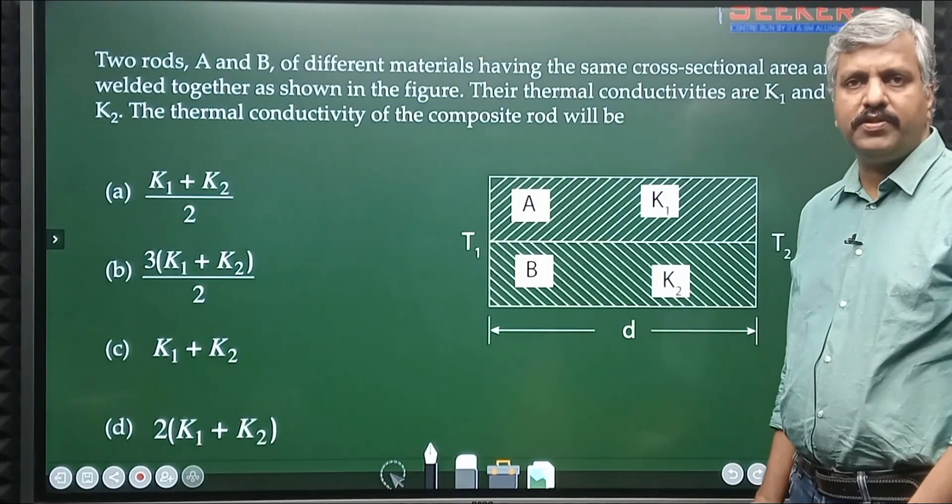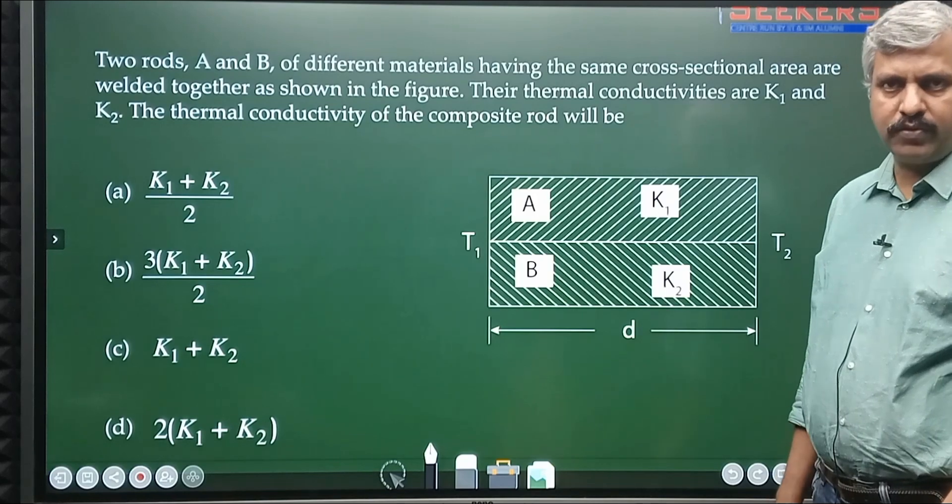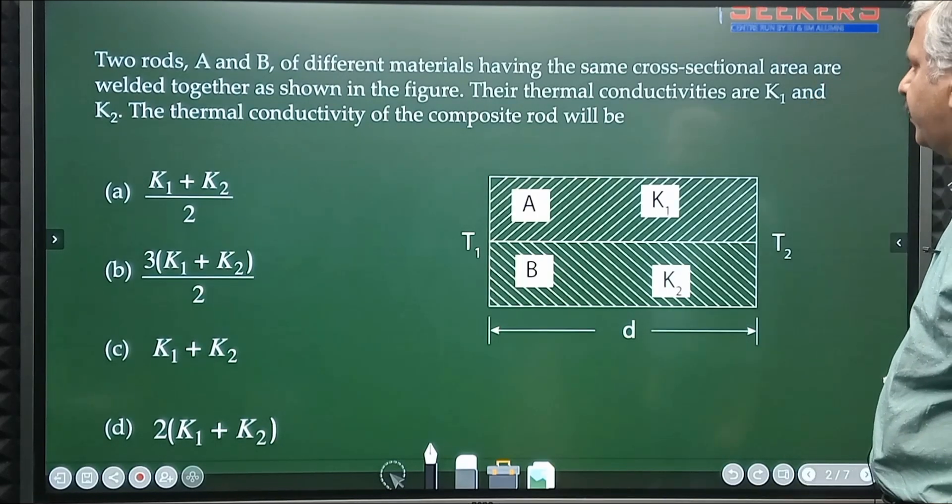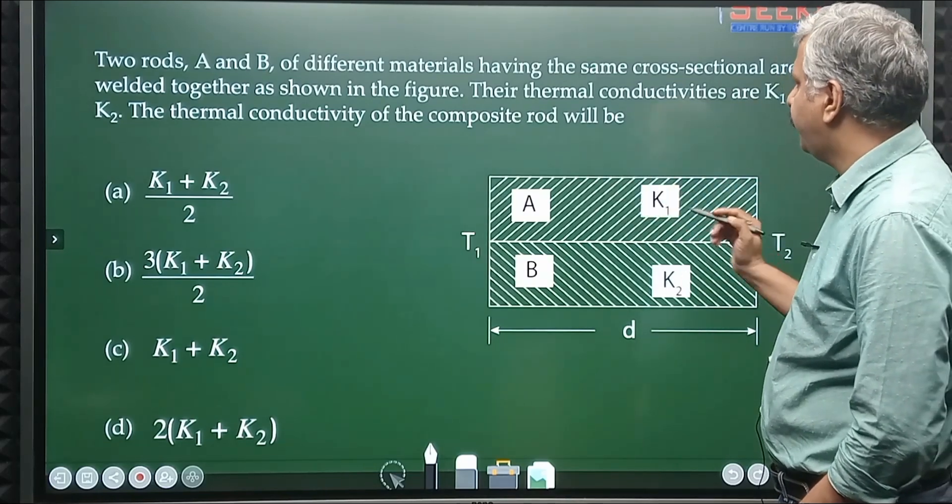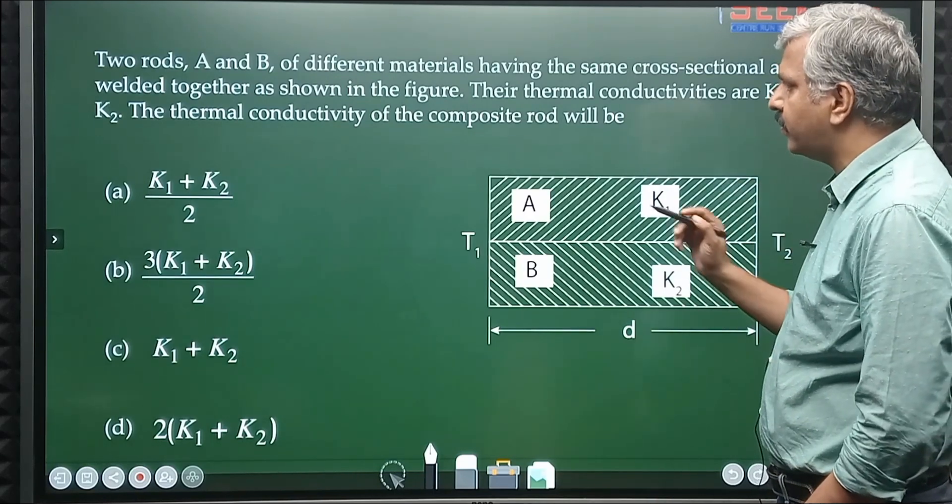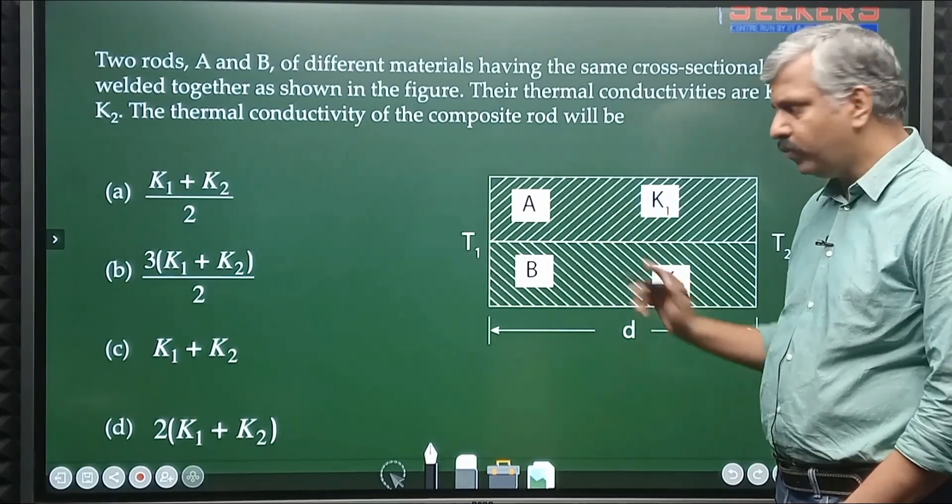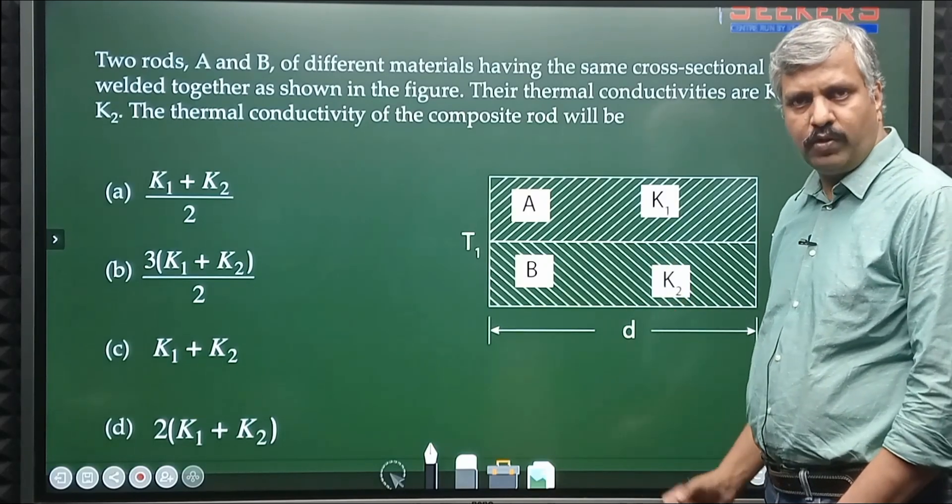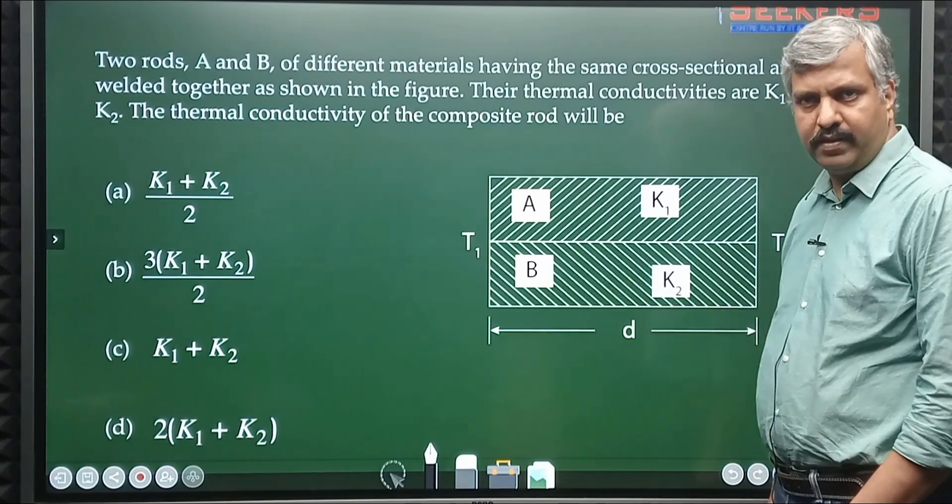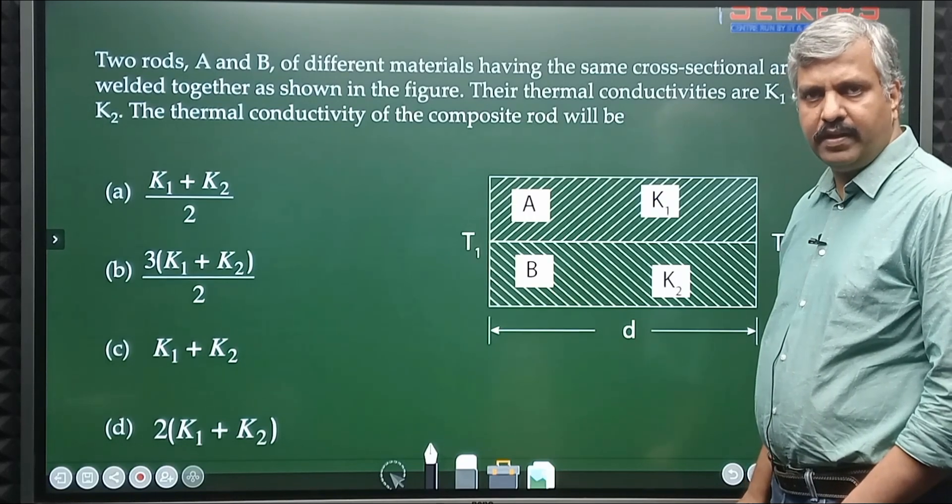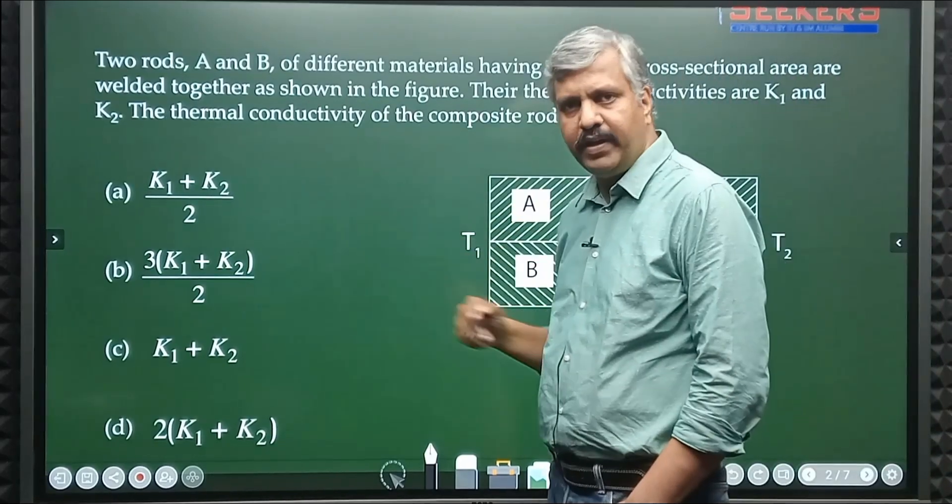I have selected questions which are previous year NEET questions. Here the question: Two rods A and B of different materials having the same cross-sectional area are welded together as shown in the figure. Their thermal conductivities are K1 and K2. The thermal conductivity of the composite rod will be? Let's use some logic. Suppose K1 and K2 were the same material, then the conductivity would have been K. So in the options, if K1 equals K2, the answer should be K.